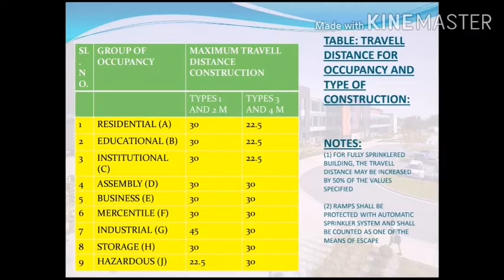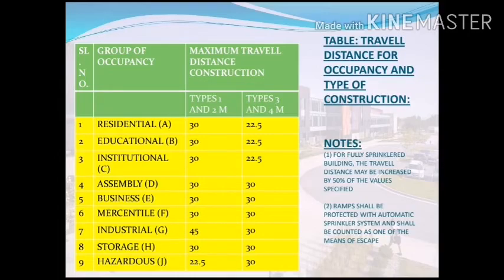As noted below the table: for a fully sprinklered building, the travel distance may be increased by 50 percent of the specified values, provided there is a proper arrangement of fire-related systems such as a fire alarm, firewall, or sprinkler. Ramps shall be protected with an automatic sprinkler system and shall be counted as one of the means of access. That covers the content on travel distance. The next slide will discuss horizontal exits.